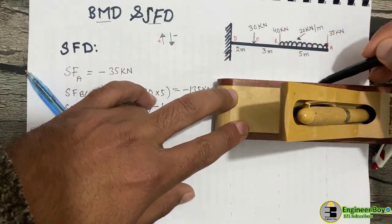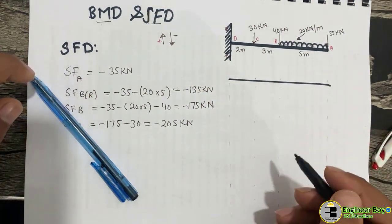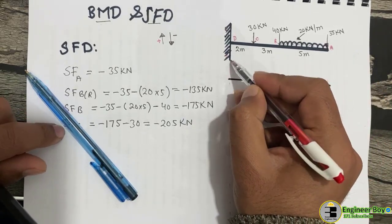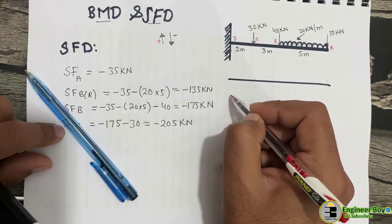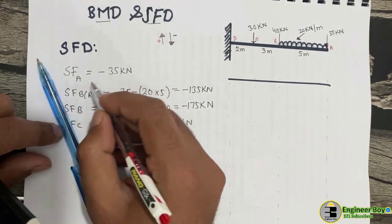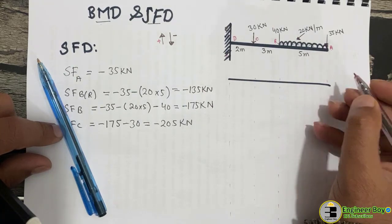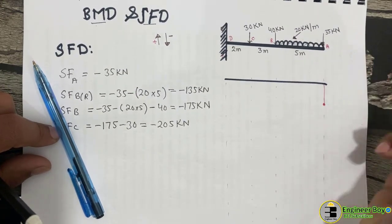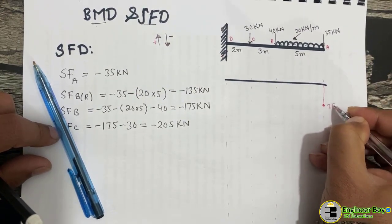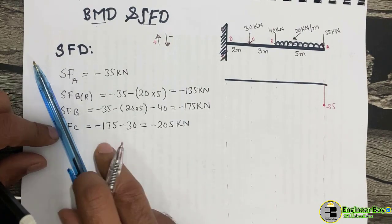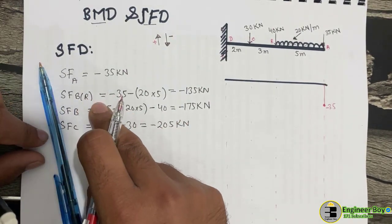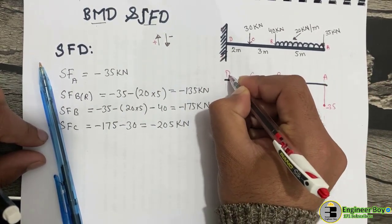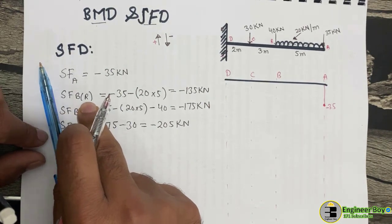To draw the shear force diagram, a reference beam is drawn. If the value is positive, we go up from the reference; if negative, we go down. At point A we have minus 35, so we draw a line going downward representing a value of 35. Let me annotate the points: A, B, C, and D.